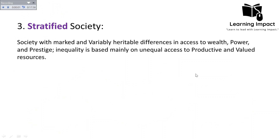The third is stratified society — a society with marked and variably heritable differences in access to wealth, power, and prestige. Inequality is based mainly on unequal access to productive and valued resources. Stratified society is a society in which the level of inequality is at its peak, with a huge inequality compared to egalitarian and ranked societies, and uneven distribution in access to wealth, power, and prestige.